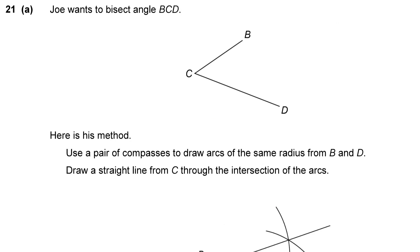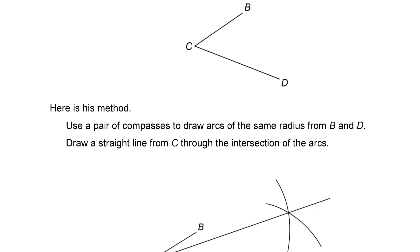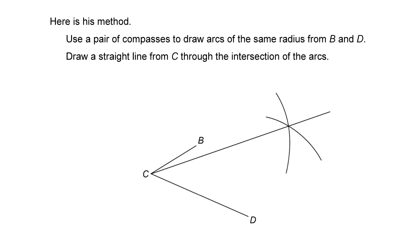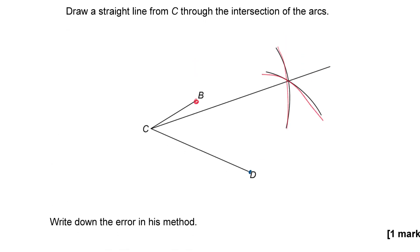Let's see. Question 21A. Joe wants to bisect angle BCD. Here is his method. Use a pair of compasses to draw arcs of the same radius from B and D. So, he's put the compass here and drawn an arc and then he's put the compass here and drawn an arc and unsurprisingly has not managed to correctly bisect the angle. So, what was his error?